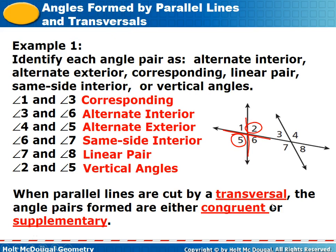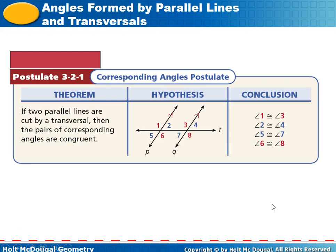When parallel lines are cut by a transversal, the angle pairs formed are either congruent or supplementary. If two parallel lines are cut by a transversal, then pairs of corresponding angles are congruent: one and three are congruent, two and four are congruent — one and three are obtuse, two and four are acute. Down here, five and seven are corresponding, and six and eight are corresponding. We know they're parallel because of that extra set of arrows on lines P and Q.